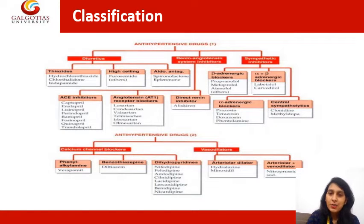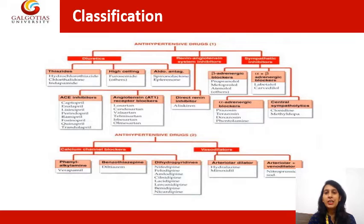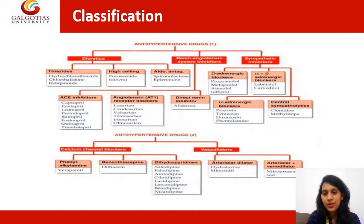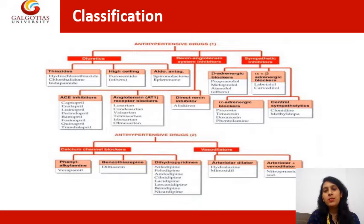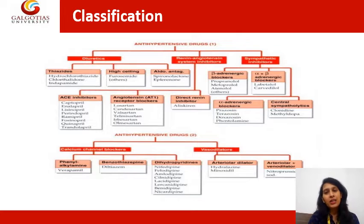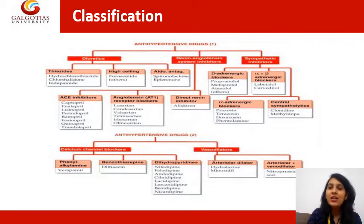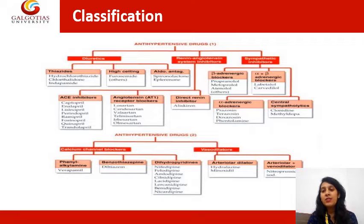In our previous lecture we discussed diuretics and the drugs acting on the renin-angiotensin system. Moving forward, the third category for antihypertensive drugs is sympathetic inhibitors — drugs acting on the sympathetic nervous system, that is the adrenergic drugs. The major neurotransmitters for the sympathetic nervous system are adrenaline, noradrenaline, and dopamine.